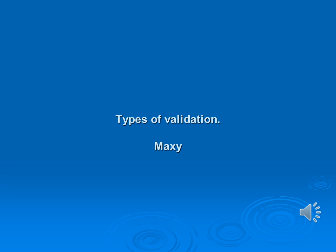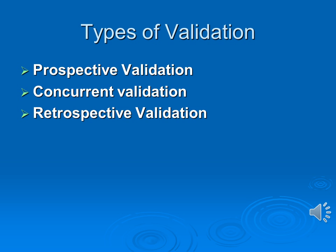This is the second part of the video. Here, let us discuss the types of validation and elements of validation. There are three types of validation. The first one is prospective validation, the second one is concurrent validation, and the third one is retrospective validation.